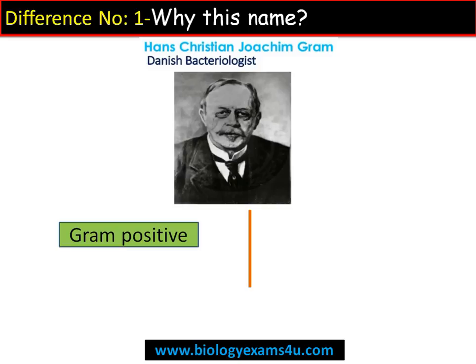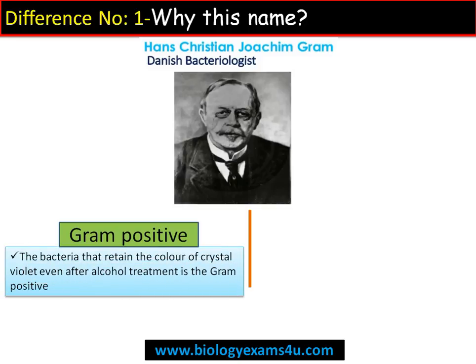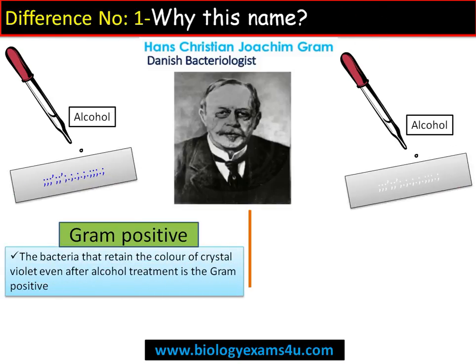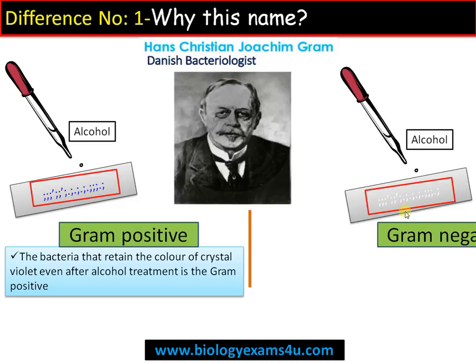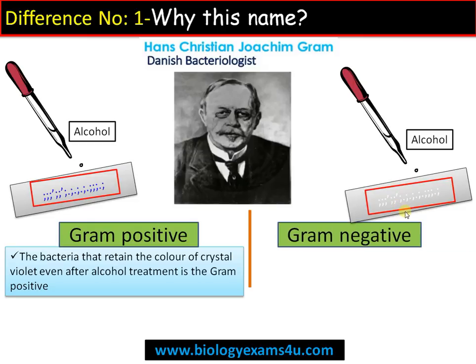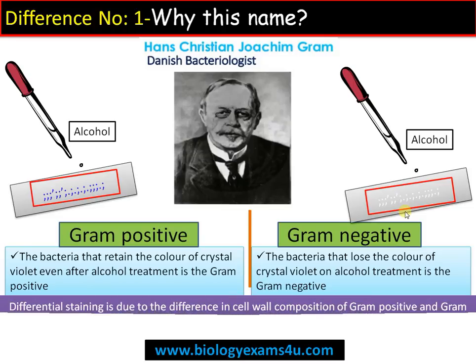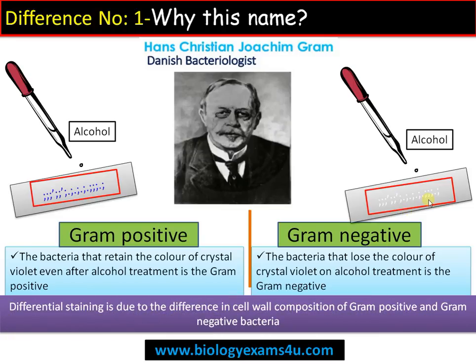Gram-positive bacteria is a bacteria that retains the color of crystal violet even after alcohol treatment. Alcohol treatment is a critical step in gram staining. Whereas gram-negative bacteria is a bacteria that loses the color of crystal violet on alcohol treatment. This difference is due to the difference in cell wall composition of gram-positive and gram-negative bacteria.